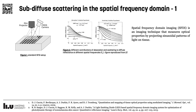Depending on the spatial frequency of the sinusoidal pattern, absorption and scattering have a different influence on the reflectance. Absorption is more influential at low spatial frequency, causing a reduction in the intensity of the pattern, while scattering is more influential at high spatial frequencies, causing a blurring in the patterns.